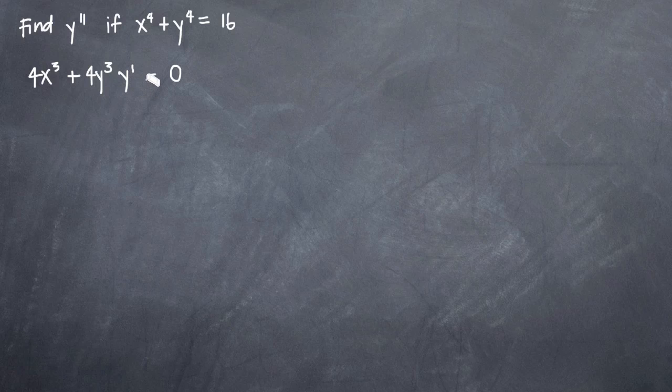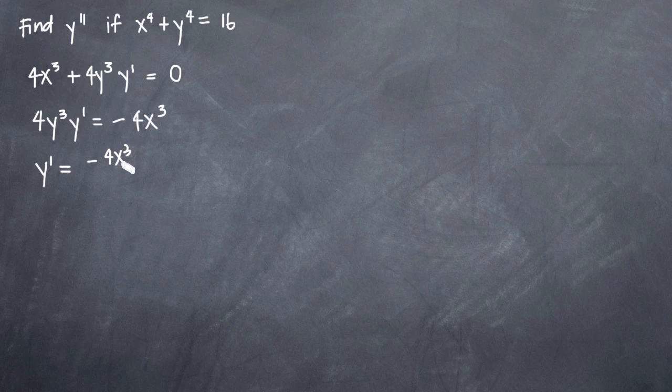This is our first derivative. We want to go ahead and solve for y prime. Whenever you're asked to find the second derivative, you have to find the first derivative first, and you want to solve for y prime, or the first derivative of y, before you move on to the second derivative. So we'll subtract 4x cubed from both sides, and we'll get 4y cubed times y prime is equal to negative 4x cubed. Now we'll divide both sides by 4y cubed to get y prime on its own, and we'll get y prime equals negative 4x cubed divided by 4y cubed. We can cancel out our 4s, and we'll get negative x cubed over y cubed.